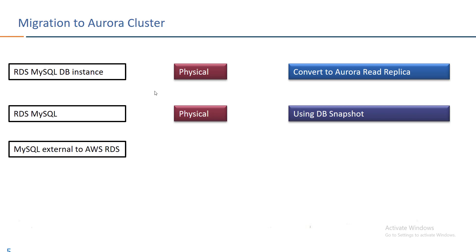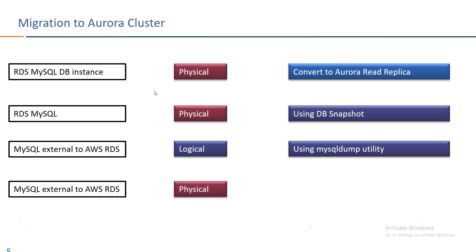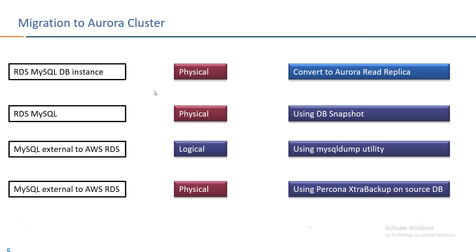The third option is for MySQL external to AWS RDS: you can do a logical migration using the MySQL dump utility for export and import. For MySQL external to AWS RDS or Aurora, a physical migration can be done using Percona XtraDB Backup on the source database. You download the utility on the machine where MySQL is running, take a physical backup, move the file to S3, and then restore from S3 to create either an RDS instance or an Aurora cluster.